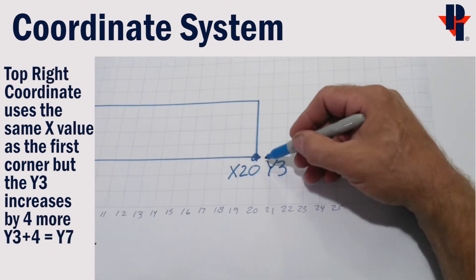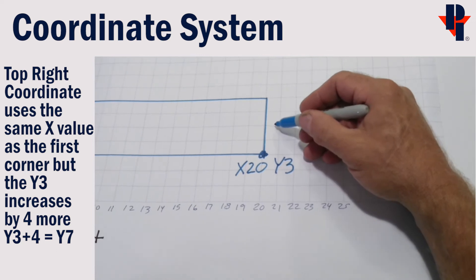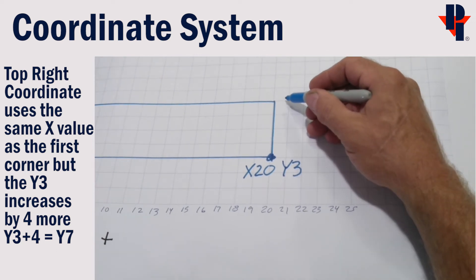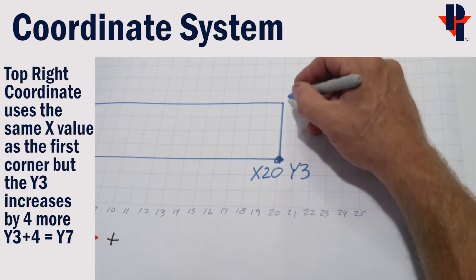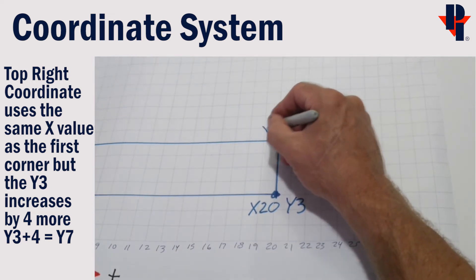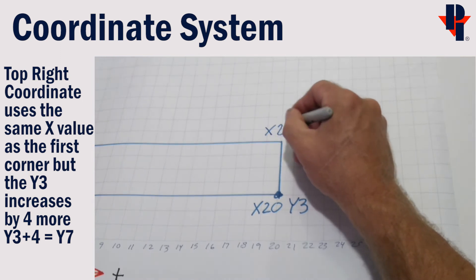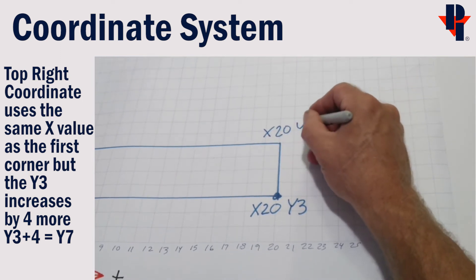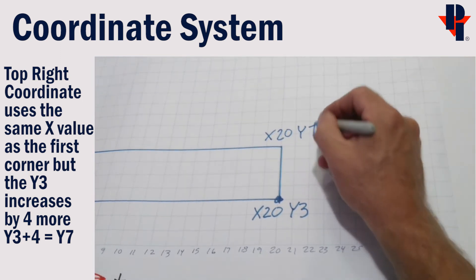Now, the top right corner. If we start at the y3 and go up 4 more, that would be y7. But we always do the x first, which is still at 20. So the coordinate for this corner would be x20, y7.